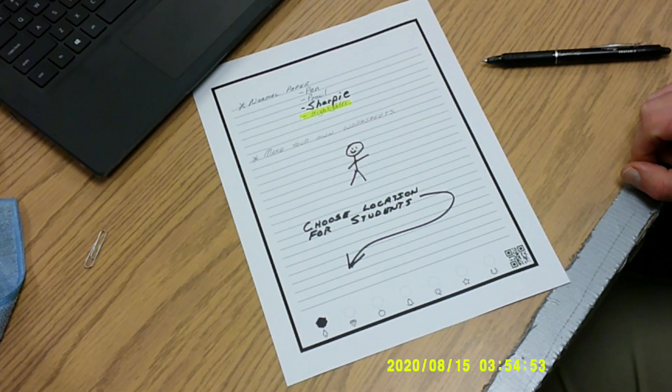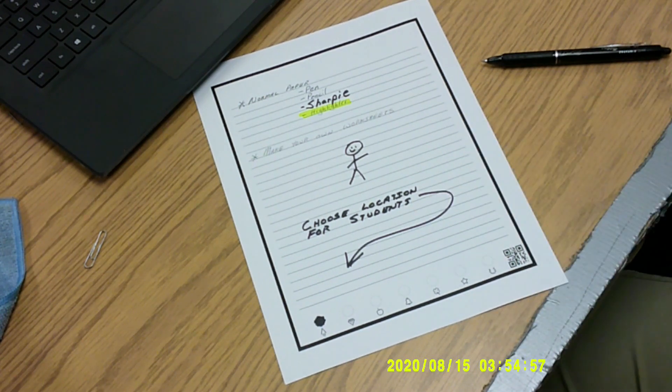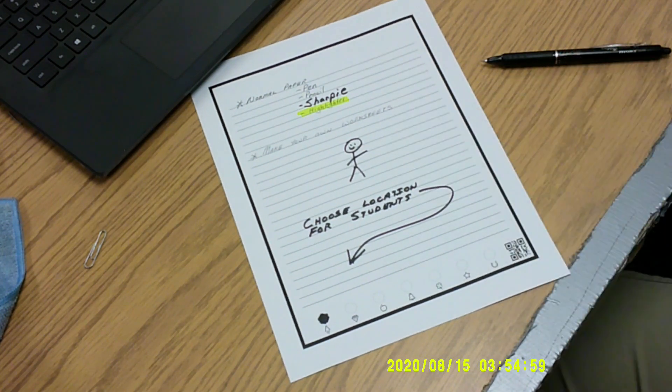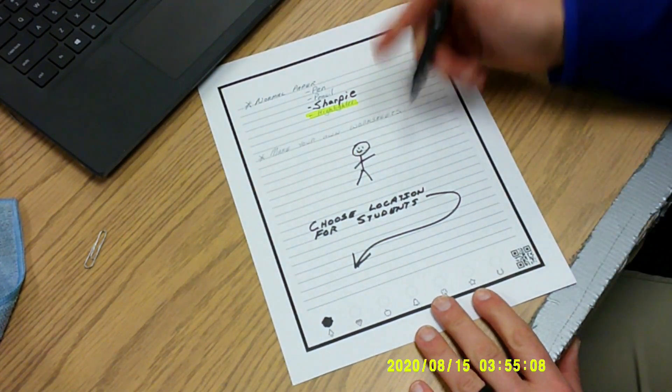Watch this next part. If you go to the Rocketbook homepage, you'll see that they have several different templates that you can download and put on regular paper. You can do lines like this. You can do the dots, such as in my Rocketbook. They have ones for music. They have contracts. Or you can make your own. You can use a regular pen.